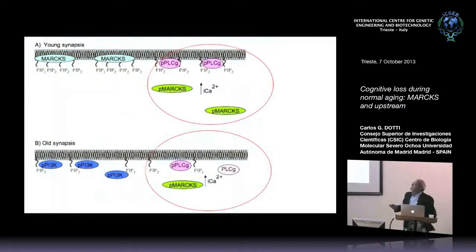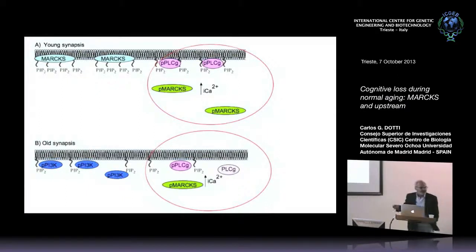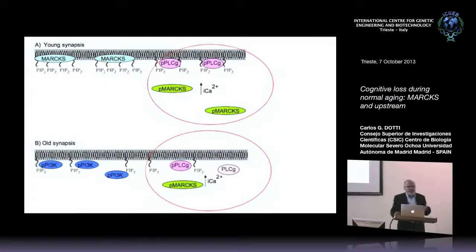The message from this published work is that in young synapses you have lots of MARCKS recruiting PIP2 into the synapse, which is important for PIP2 hydrolysis by PLCγ and subsequent calcium-mediated activation of memory genes. In old synapses, there is much more PI3-kinase activity because MARCKS is not recruiting PIP2, shifting signaling towards the survival pathway and away from PLCγ-mediated synaptic plasticity. Part of the learning problems we experience as we age is because we don't have enough MARCKS.